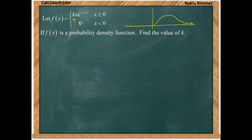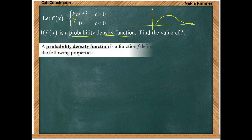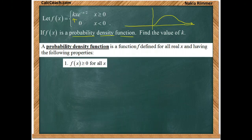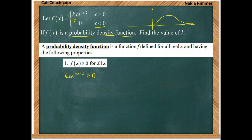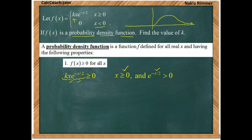We're told this is a probability density function. That's a function defined for all real values of x with two properties. First, the function always needs to be greater than or equal to 0. The function equals 0 for negative x. For the other part, there's k, x, and e to the negative x over 2. Since x is always positive and e to the negative x over 2 is always positive, k must be positive. That satisfies the first property.